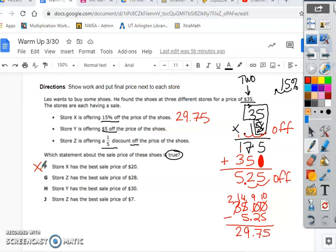So, then it says store Y is offering $5 off the price. Oh, that's an easy one, right? $35. It's $5 off. So, I already have money and money. Nothing tricky here. We just subtract and we get $30. So, this one says store Y has the best sale price of $30. Well, yes, it's $30, but is that the best sale price? That's going to be a no. That's false. Because this one is less than this one.